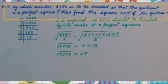By which number 8450 is to be divided so that the quotient is a perfect square. Also find the square root of the quotient. First of all prime factor. Prime factors are 2 into 5 into 5 into 5 into 13 into 13.